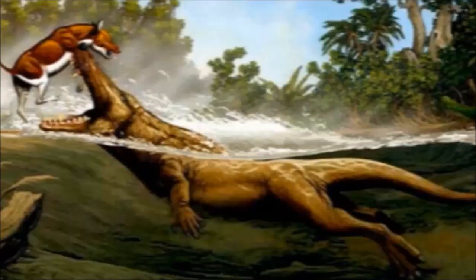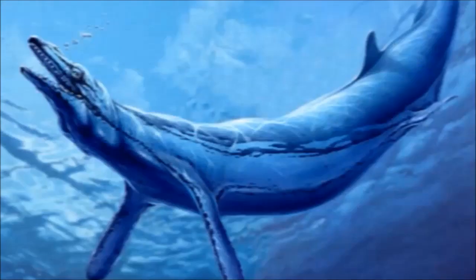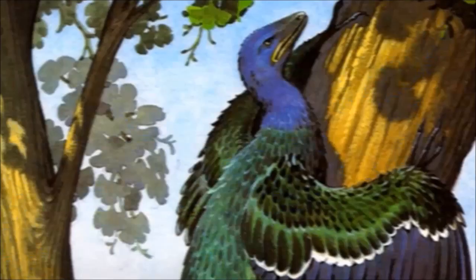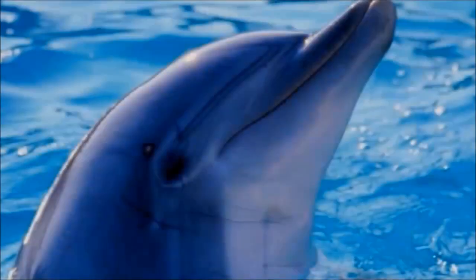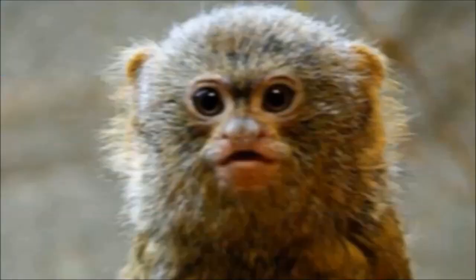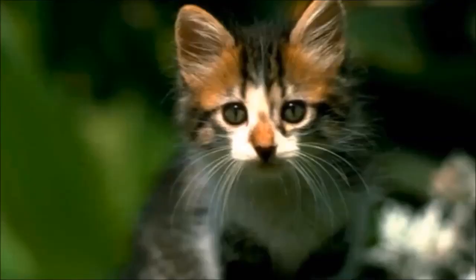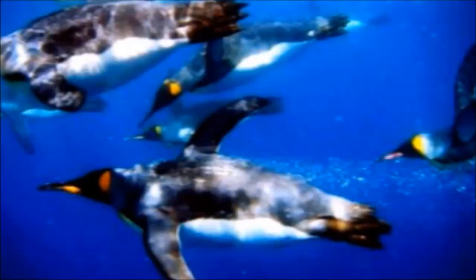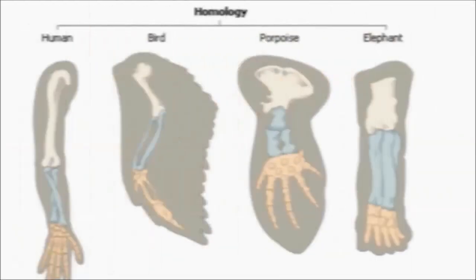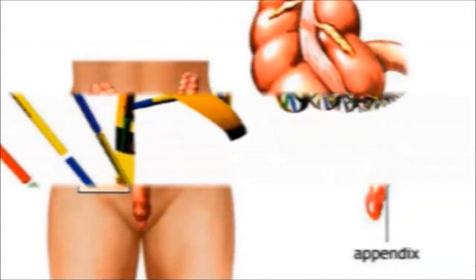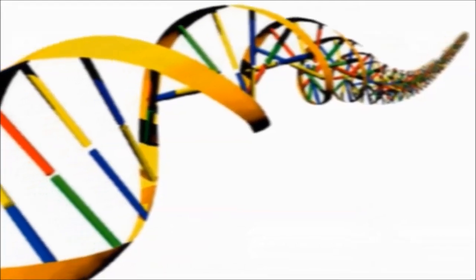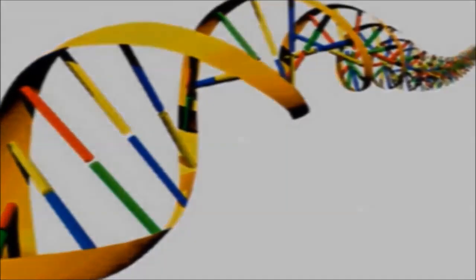Not only do we find multitudes of transitional species all throughout the fossil record, we also find within currently living animals a great variety of evidence displaying ongoing transitional processes. For example, homologous structures, vestigial organs, and even tucked away within the genetic code.